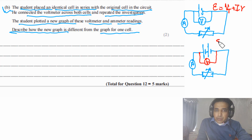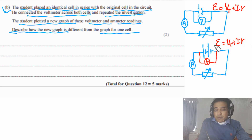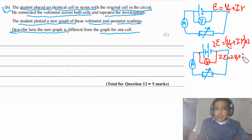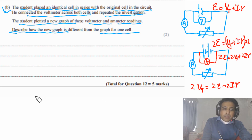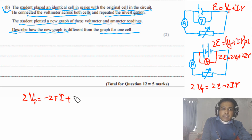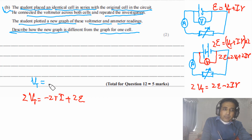For two cells: 2E = 2V_T + 2·I·r. Rearranging: 2V_T = 2E − 2·I·r, which can be written as 2V_T = −2r·I + 2E. Comparing this with the single-cell equation V_T = −r·I + E, we can identify the new gradient and new y-intercept.